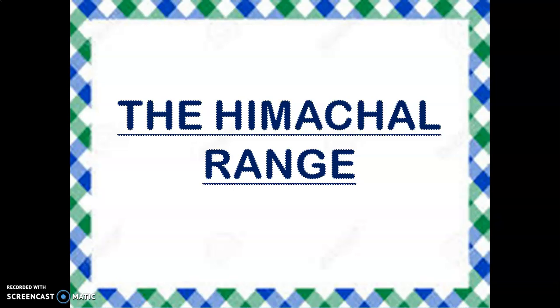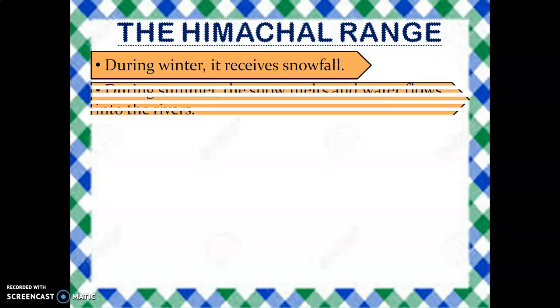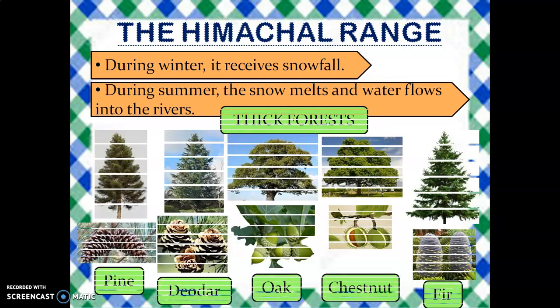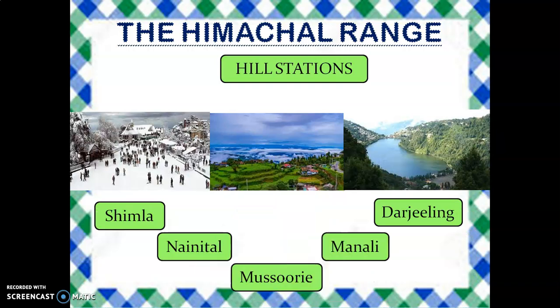Now we will get information about the Himachal Range, which is also called Middle Himalayas. It lies to the south of Himadari and the average height of the mountains in this range is 5,000 meters above sea level. It receives snowfall during winter and during summer its snow melts and water flows into the rivers. This area is covered with thick forests of pines, deodar, oak, chestnut, and fir. There are beautiful valleys in this region and a number of hill stations like Shimla, Nainital, Mussoorie, Manali, and Darjeeling are also located in this region.